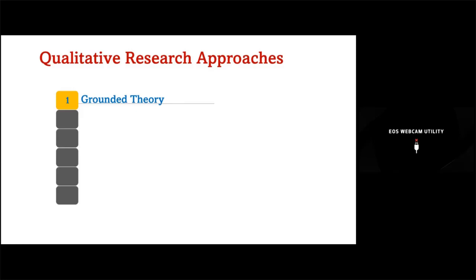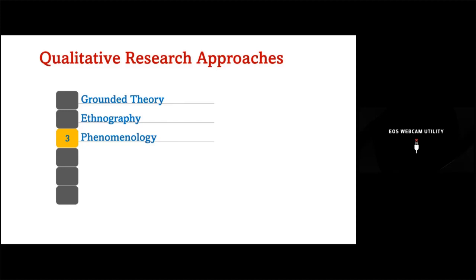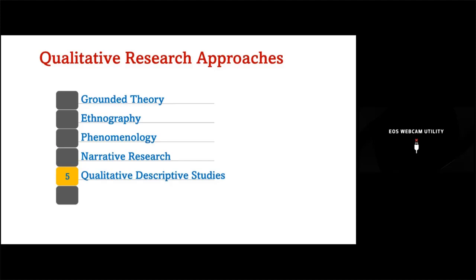The first one is grounded theory. We will go through each one in detail. The second type is ethnography, the third type is phenomenology, then narrative research, and the fifth type is the qualitative descriptive study. Up till qualitative descriptive, these are the pure qualitative or constructivist paradigm studies. The sixth one is the mixed method type of study, based on the pragmatism research paradigm. So the six types are: grounded theory, ethnography, phenomenology, narrative research, qualitative descriptive studies, and mixed method study.